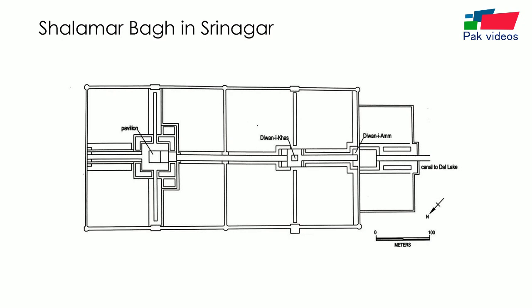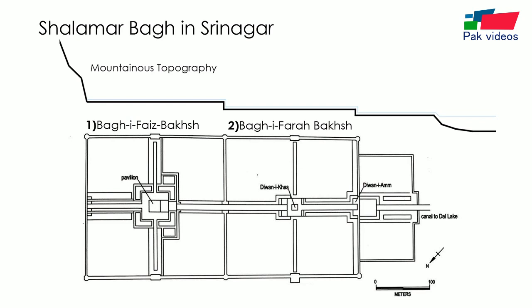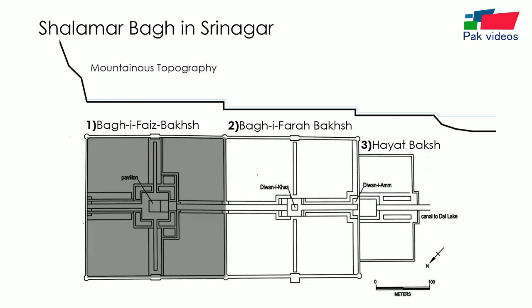This garden has three terraces: two great terraces with four-part gardens and a smaller entry court at lake level. The uppermost garden, or Baghi Faiz Baksh, served as the Zanana, or the zone appropriated for women, and had a pavilion of black marble set within a square pool.